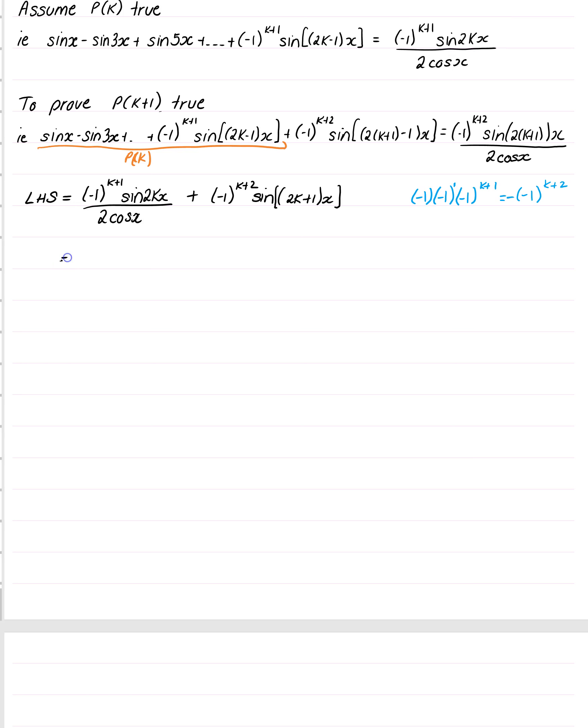So what that means is I can now replace this with just minus, minus 1 to the k plus 2. I hope you don't mind if I do that. So that's going to become minus 1 to the k plus 2. And don't forget the minus has to stick out the front. Go back and listen to what I said again over there if you don't quite get that.